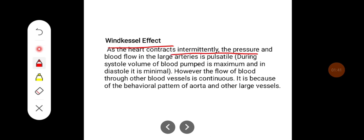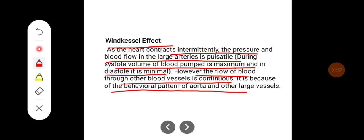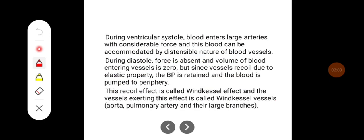Windkessel effect: as the heart contracts intermittently, the pressure and blood flow in the large arteries is pulsatile — that is, during systole the volume of blood pumped is maximum, and in diastole it is minimal. However, the flow of blood through the blood vessels is continuous, because of the behavioral pattern of the aorta and other large vessels.